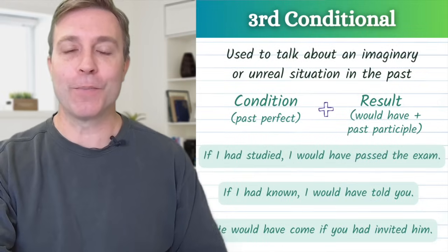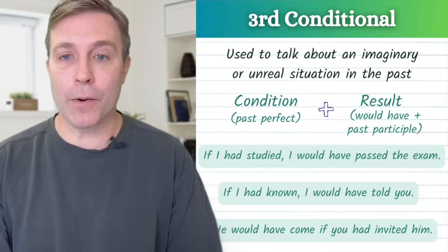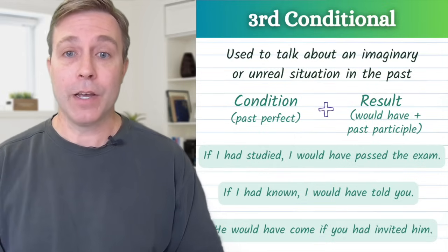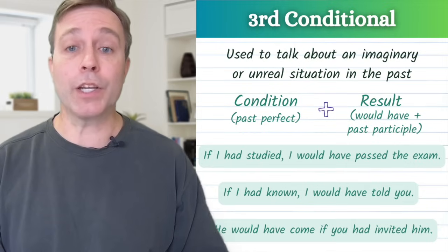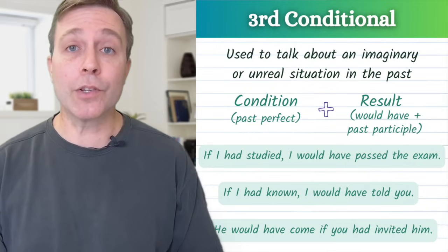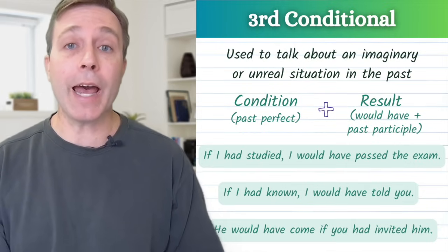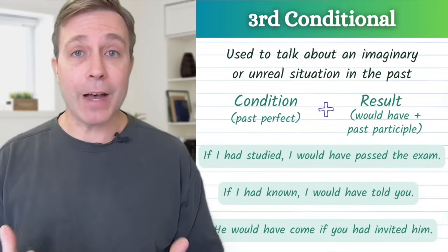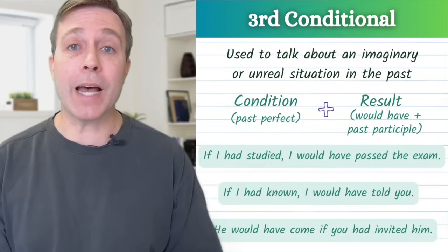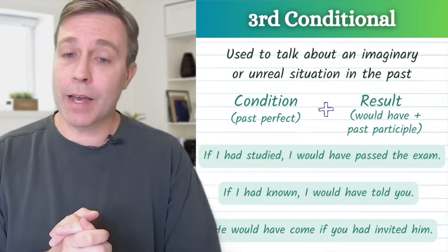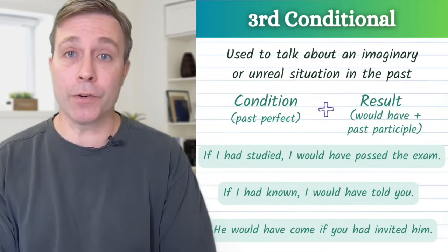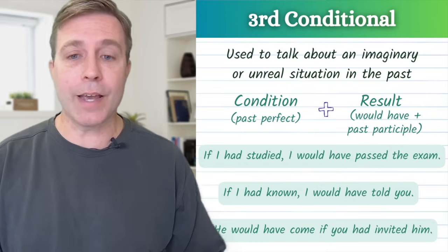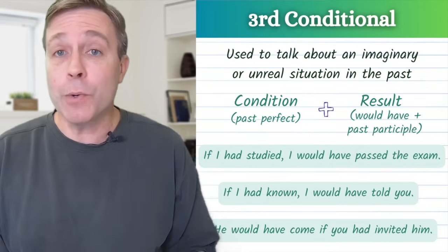The third conditional is used to talk about an imaginary or unreal situation in the past. For the condition, we use the past perfect, and the result uses would have plus the past participle. For example: if I had studied, I would have passed the exam. If I had known, I would have told you. Or with the result first: he would have come if you had invited him.